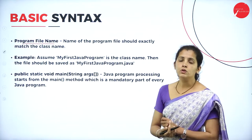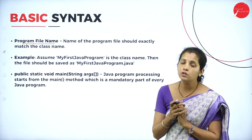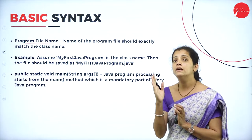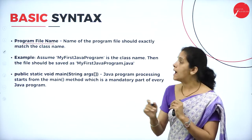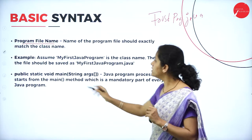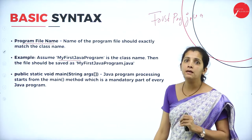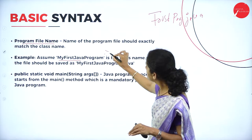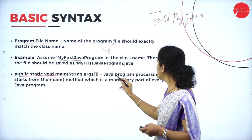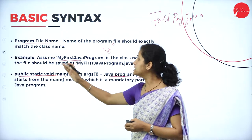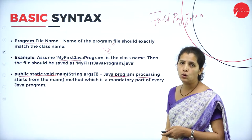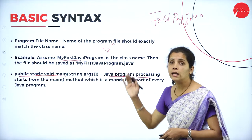The program file name must be the same as your class name. For example, if my class name is 'FirstPrg', the file name is 'FirstPrg.java'. If the class name is 'MyFirstJavaProgram', the file name is 'MyFirstJavaProgram.java'. Also, Java program execution starts from the 'public static void main' method.